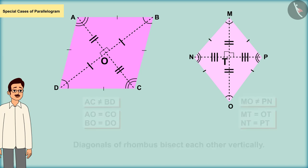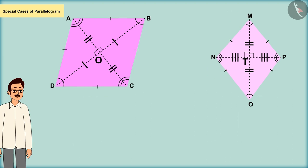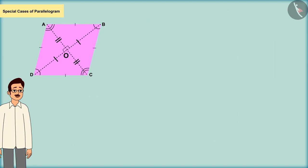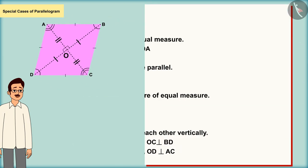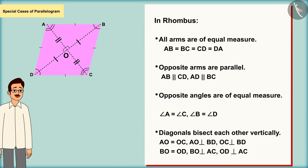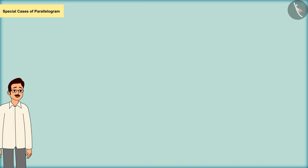If we discuss its diagonals, we will find that both diagonals are not of equal measure but they bisect each other. So let's now write the characteristics of the rhombus with the help of these two figures.